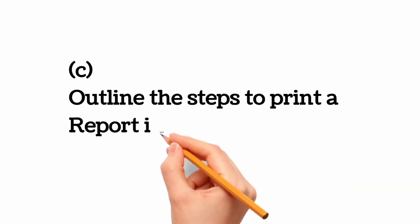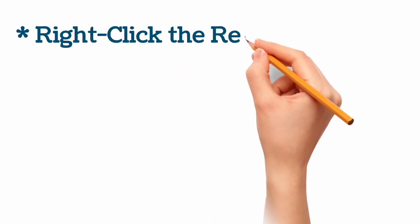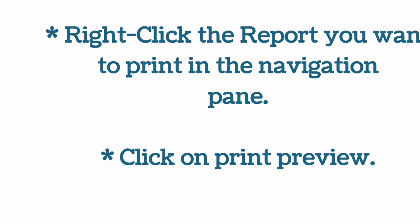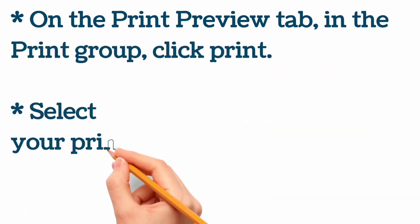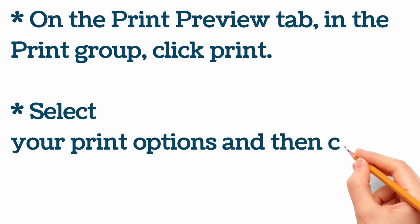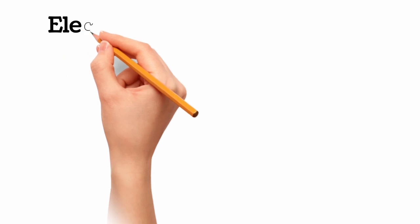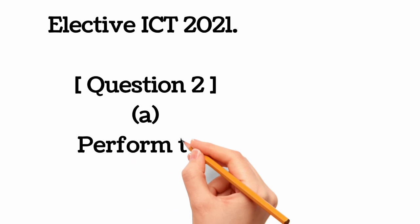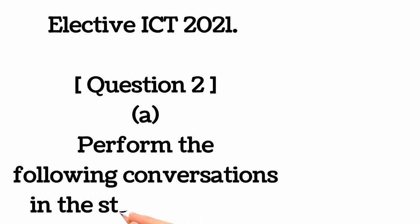Moving on to 1c: the steps to print a report in MS Access. Step one: right-click the report you want to print in the navigation pane. Click on print preview, then on the print preview tab in the print group, click print. Select the print option and then click OK to print your report.